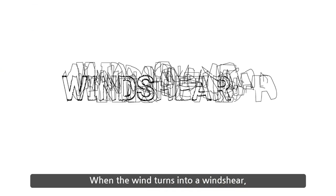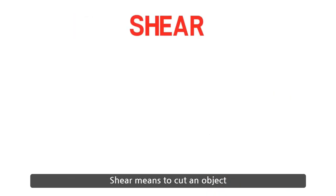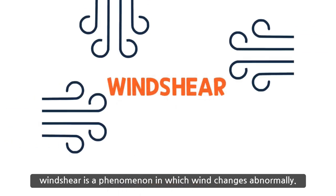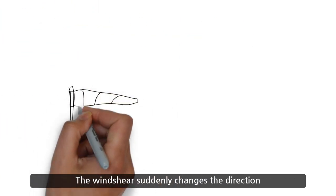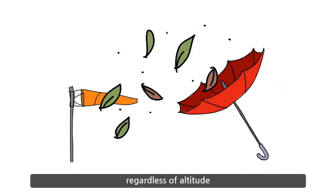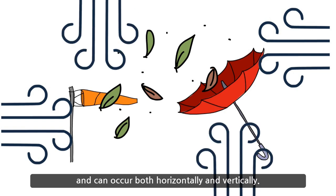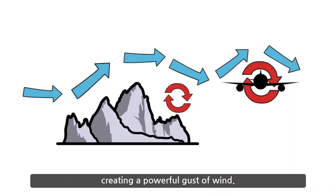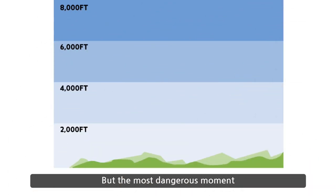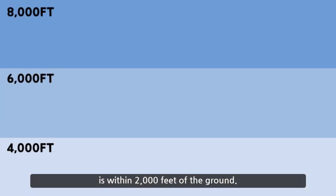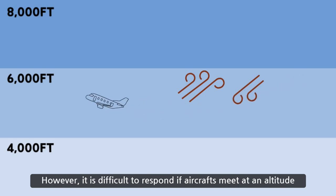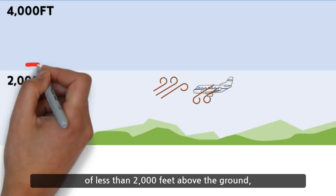When the wind turns into a wind shear, it becomes the scariest danger. Wind shear is the combination of wind and shear — shear means cutting an object by applying a force in parallel but opposite directions. Wind shear is a phenomenon in which wind changes abnormally, suddenly changing direction or intensity in a short time, regardless of altitude, and can occur both horizontally and vertically. Winds strike various terrains and become irregular, creating powerful gusts. Wind shear can occur at all altitudes, but the most dangerous moment is within 2,000 feet of the ground. If aircraft encounter this phenomenon at high altitude, they can recover with lower risk. However, it is difficult to respond if aircraft encounter wind shear at less than 2,000 feet above the ground.